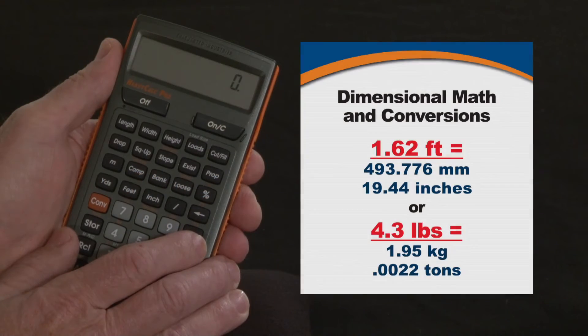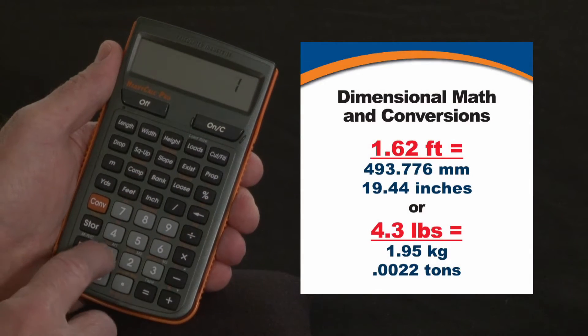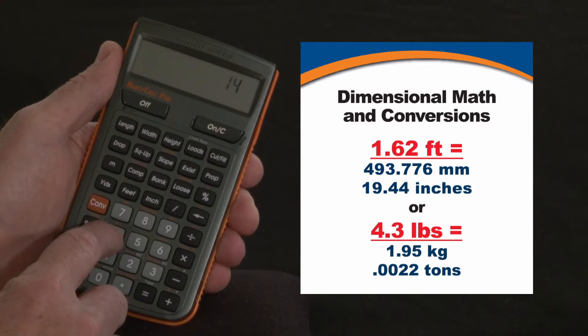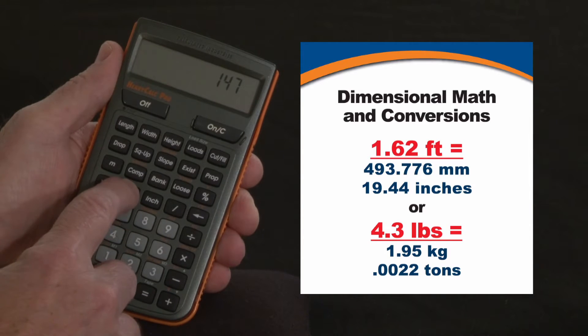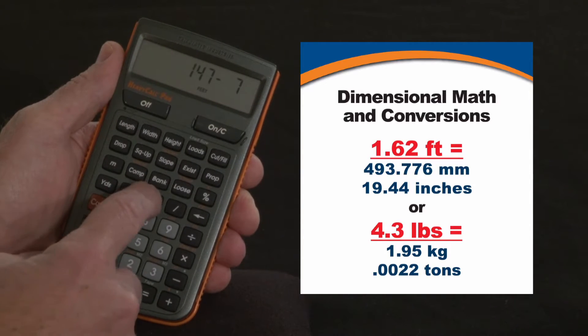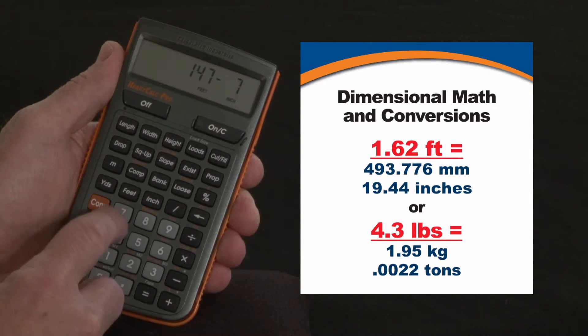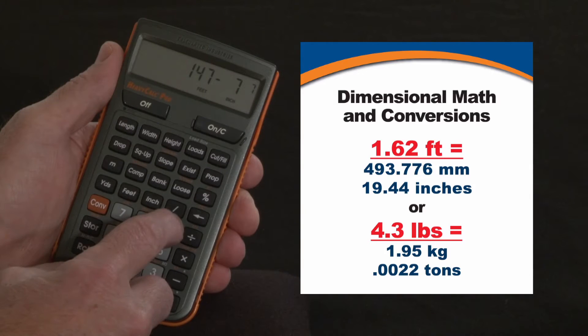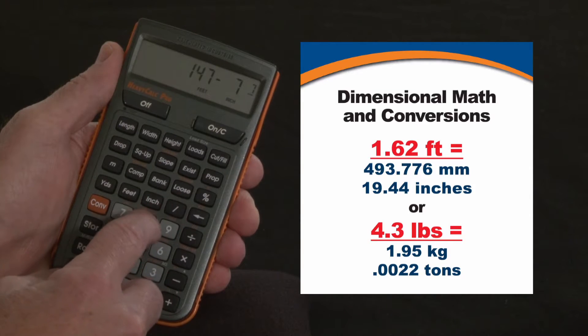Now let me show you how to do dimensional math with your heavy calc. You put in a dimension pretty much the way you say it: 147 feet, 7 inches, and any fraction down to 64ths just the way you write it — 7/8ths.